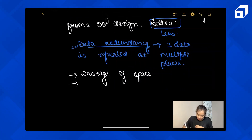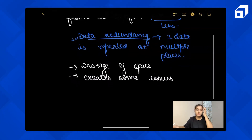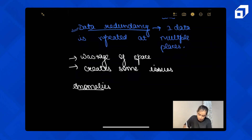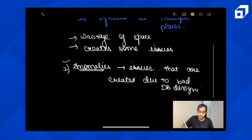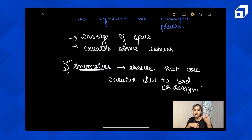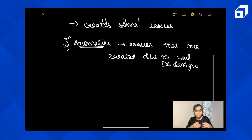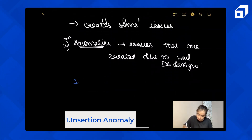Along with wastage of space, redundancy creates some other issues as well — they are called anomalies. Anomalies just means issues. So what are the different issues created due to bad database design? These anomalies are categorized into three subtopics. The very first one is insertion anomaly.